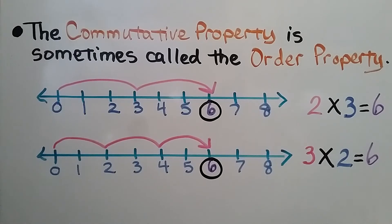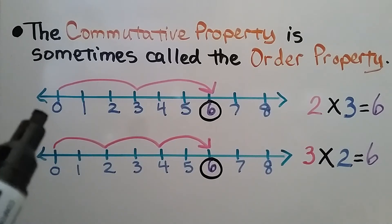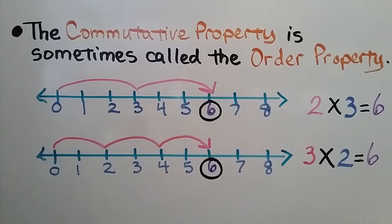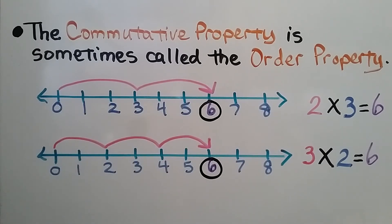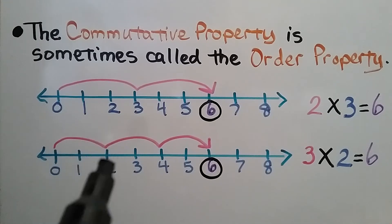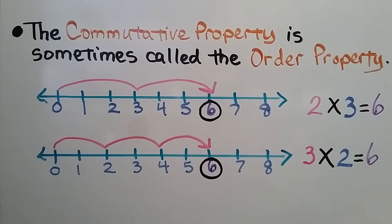The commutative property is sometimes called the order property. If we have two groups of 3, it's equal to 6. And if we have three groups of 2, it's equal to 6. We can change the order of the factors and the product stays the same.